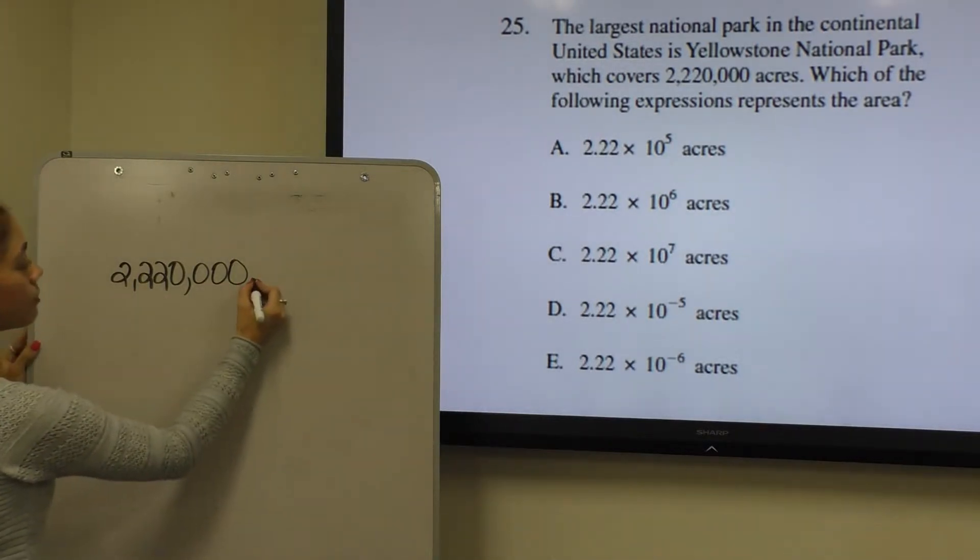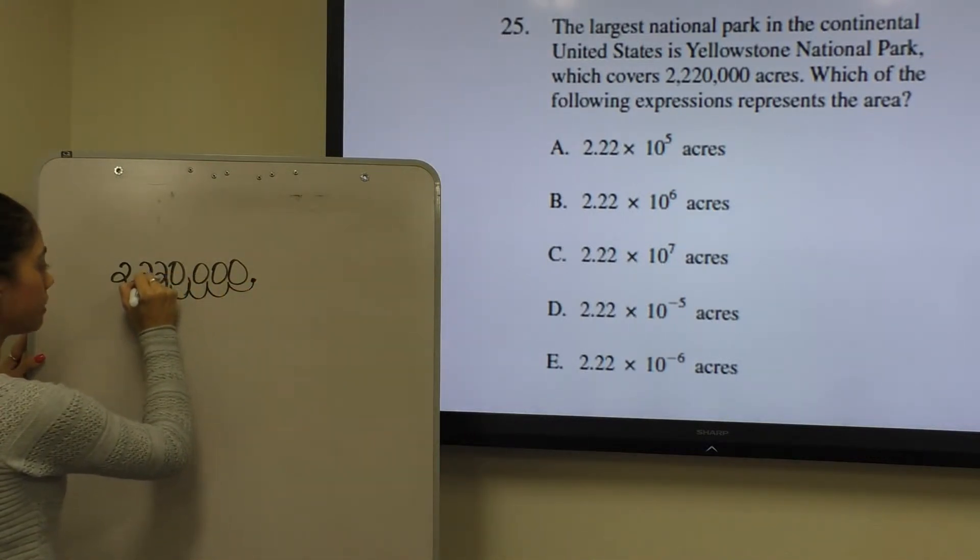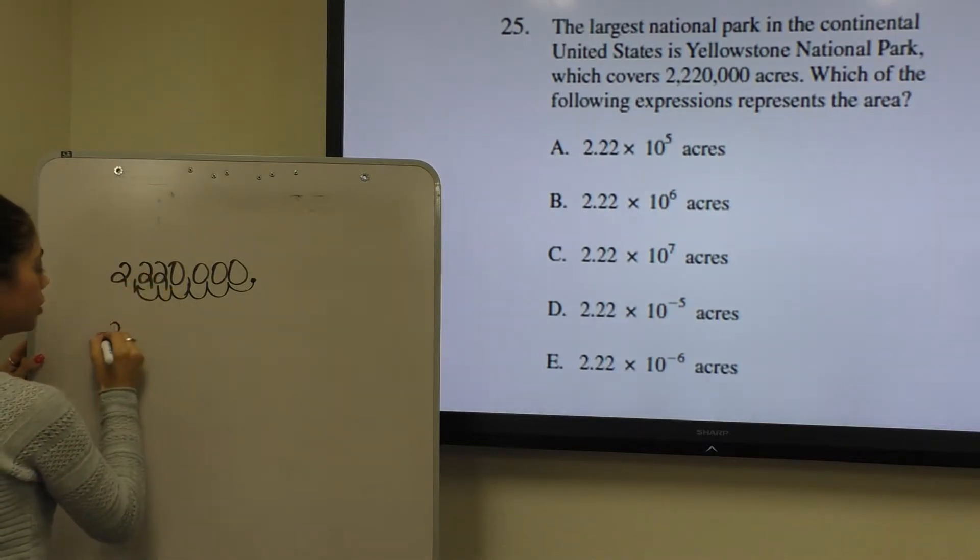What I mean by that is, we would move the decimal 1, 2, 3, 4, 5, 6 spaces to the left, in order to get 2.22.